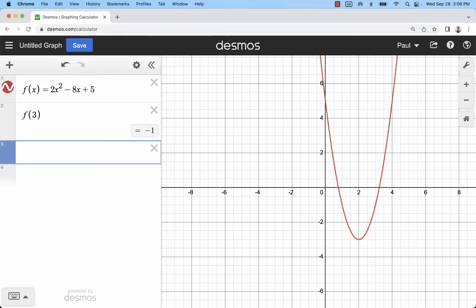I can evaluate this function at a lot of different points just by using the function input notation. So f(3), for example, f(2), and so on. Now I have my outputs here.